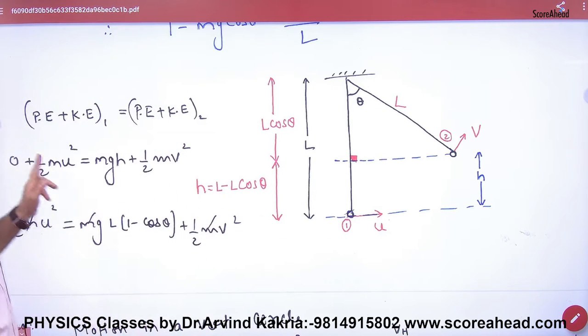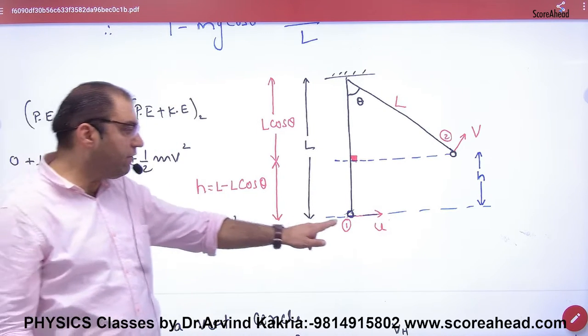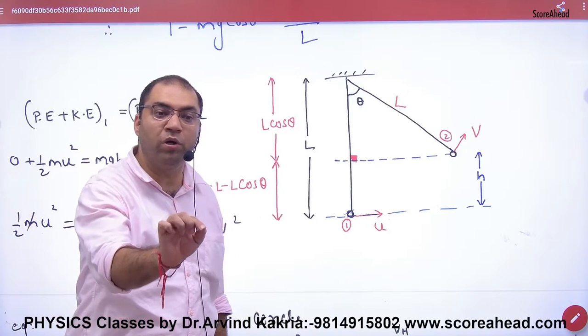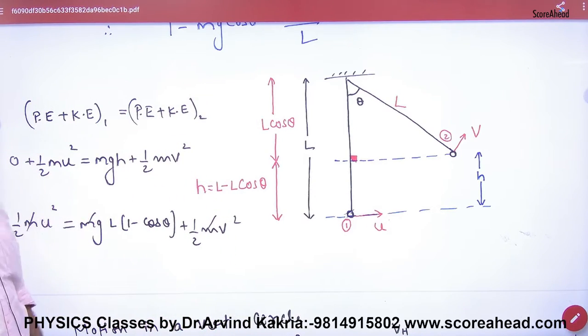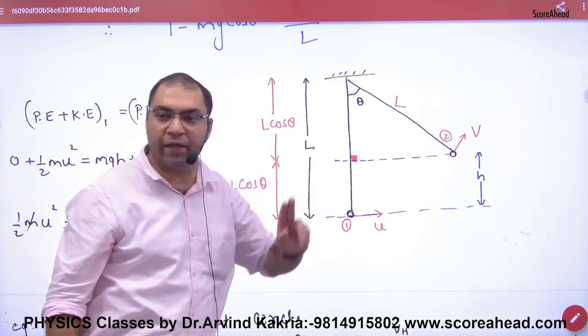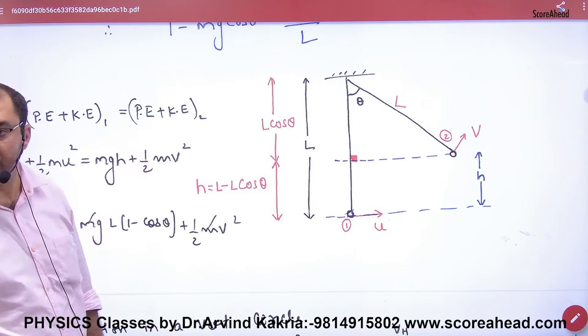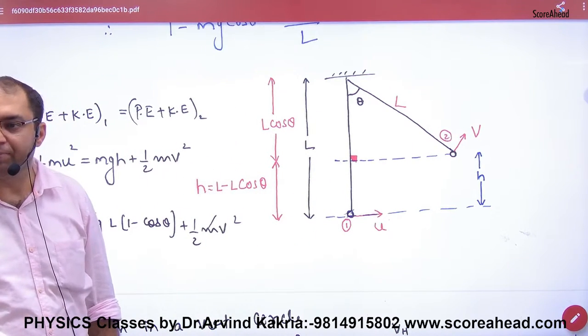At point one: potential energy is zero, kinetic energy is half mu². At point two: kinetic energy is half mv², potential energy is mgh. But h is not given in the question.